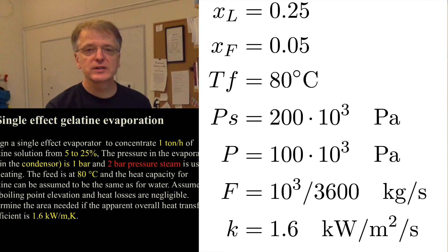The pressure in the condenser governing the temperature of the V and L flow is 1 bar, that is 100 kPa. And finally the k value is 1.6 kW per meter Kelvin.